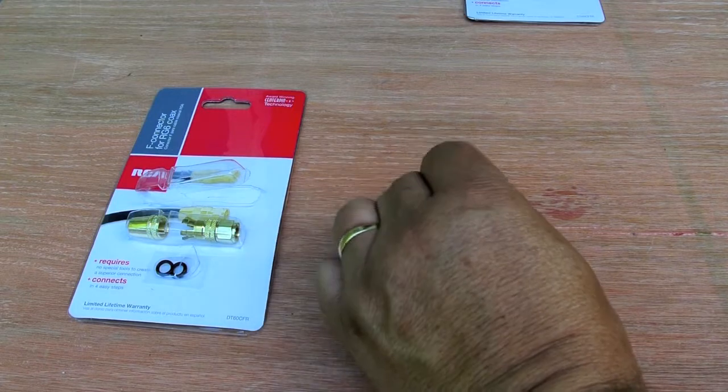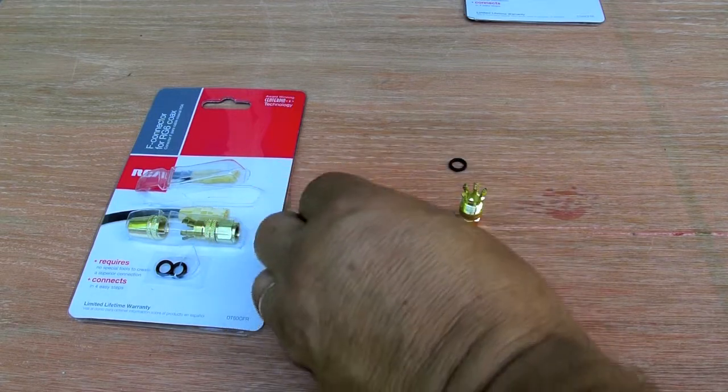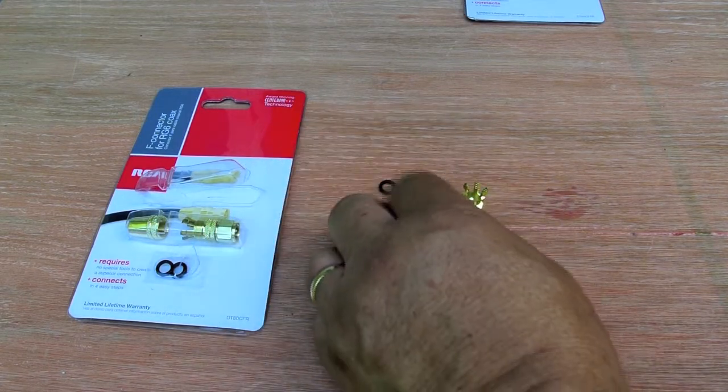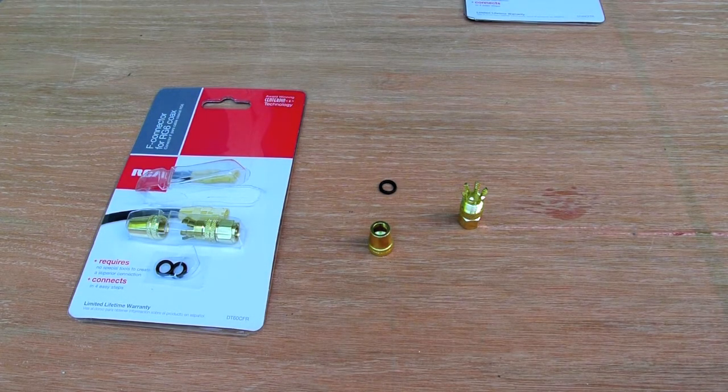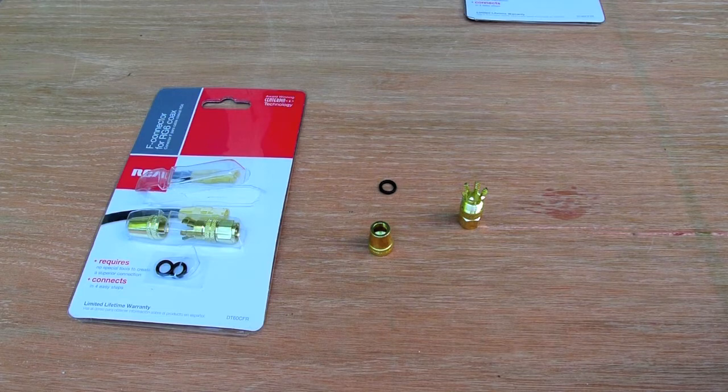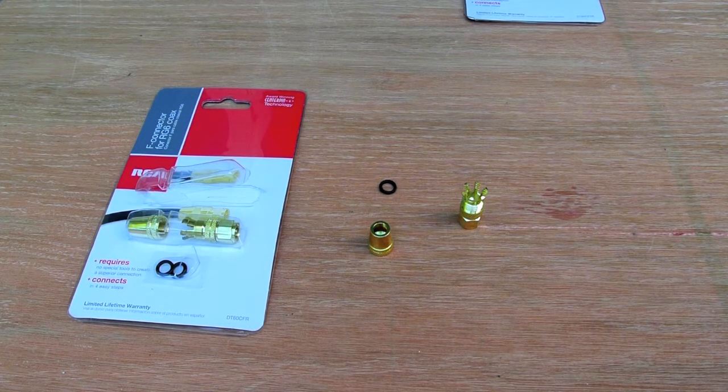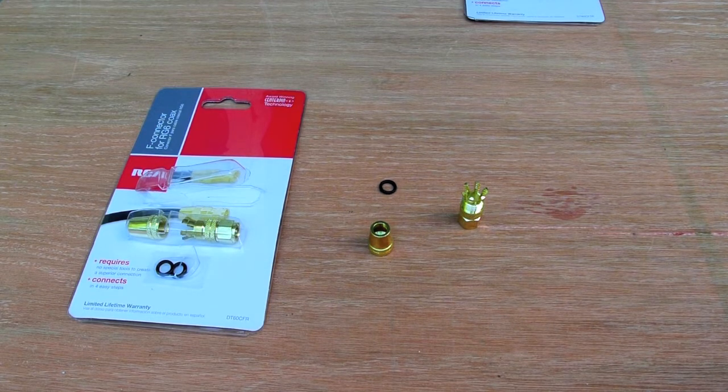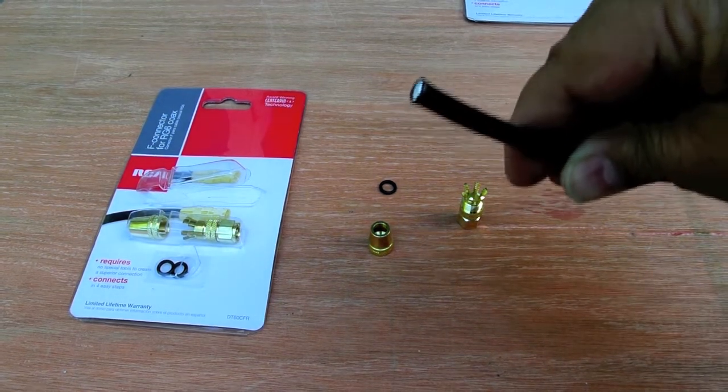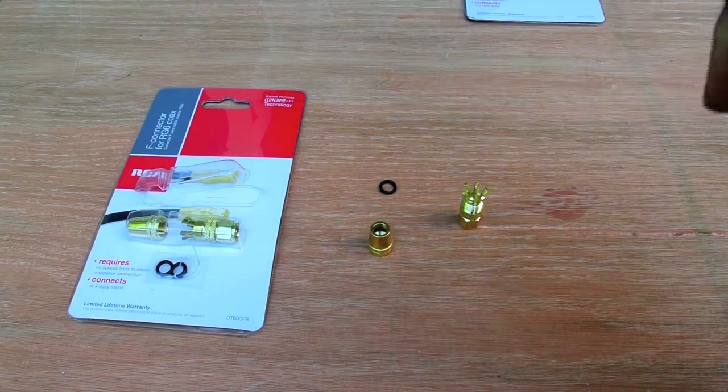The way these work is you really don't have to monkey around with doing any cutting and trimming back of the wires or anything. All you need to do is cut the wire off straight. Just like this - you just cut the wire straight.